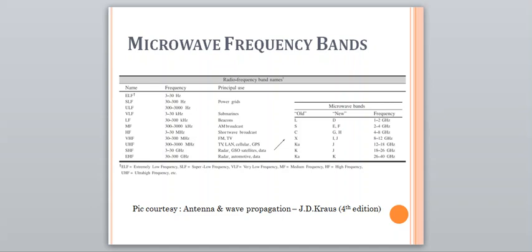Here we have different frequency bands. You could see here ELF is nothing but extremely low frequency. Its frequency range is 3 to 30 Hz. SLF is super low frequency. And ULF is upper low frequency. VLF is very low frequency. So SLF is 30 to 300 Hz. And ULF is 300 to 3000 Hz. So these three ELF, SLF and ULF are principally used as power grids.